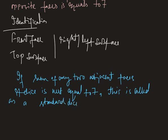So therefore, a standard die has opposite faces sum of opposite faces is seven and sum of adjacent faces are not equal to seven.